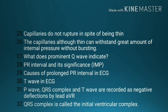Number 30, T wave in ECG. Number 31, P wave, QRS complex, and T wave are recorded as negative deflections in lead AVR. Number 32, QRS complex is called the initial ventricular complex.